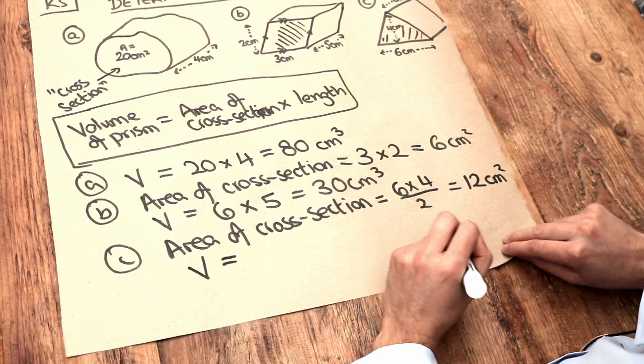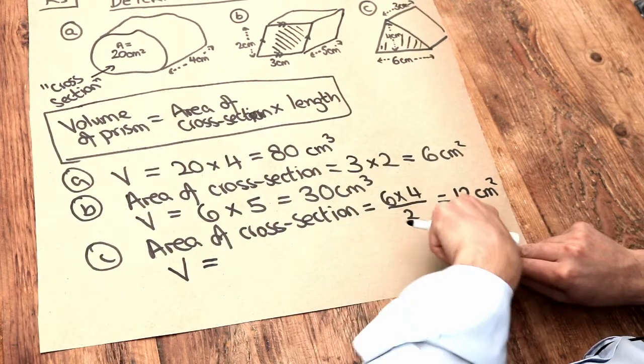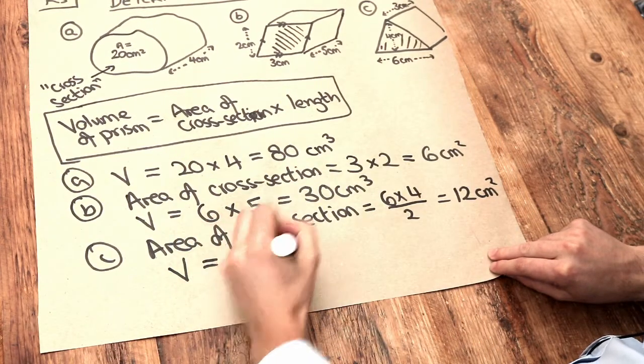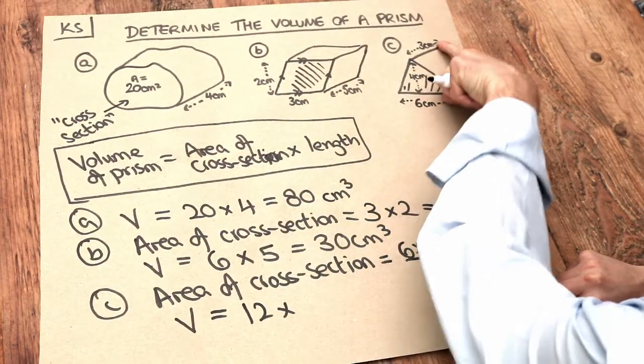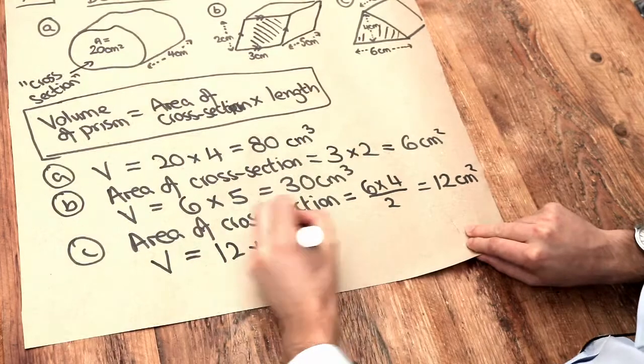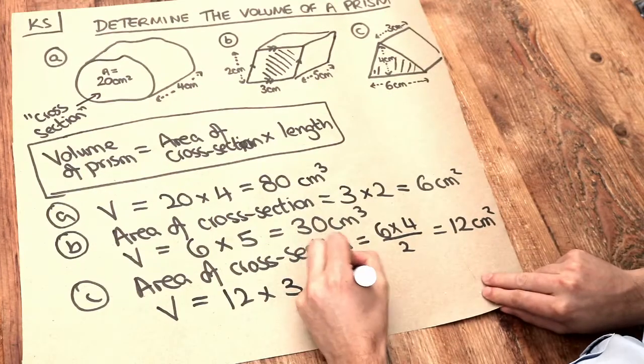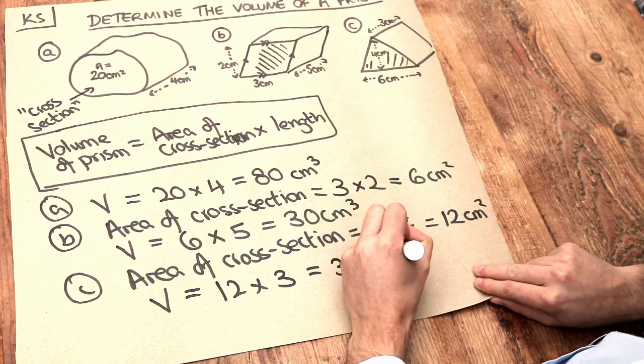And therefore the volume of that prism is going to be the area of the cross section which is 12 multiplied by the length of the prism which is that length there. That's 3 centimetres. And that is going to give you 36 centimetres cubed.